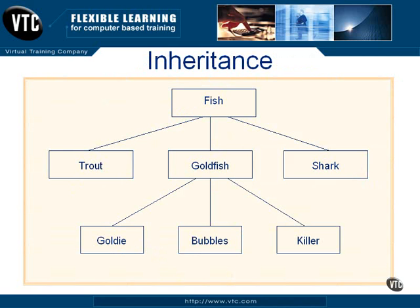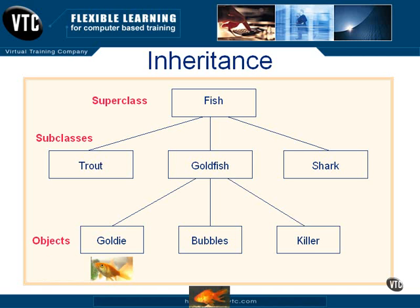The concept of inheritance is useful when you're working with classes, because each subclass inherits the characteristics of the class above it. Here we have an inheritance hierarchy, and at the top our superclass is fish. All of the attributes and operations belonging to the fish class also belong to the subclasses of trout, goldfish, and shark. Even though those are all kinds of fish, they are also different from each other in specific ways, enough to each be its own class. Within the goldfish class, we have individual objects — particular fish swimming in an aquarium — we'll call them Goldie, Bubbles, and Killer.